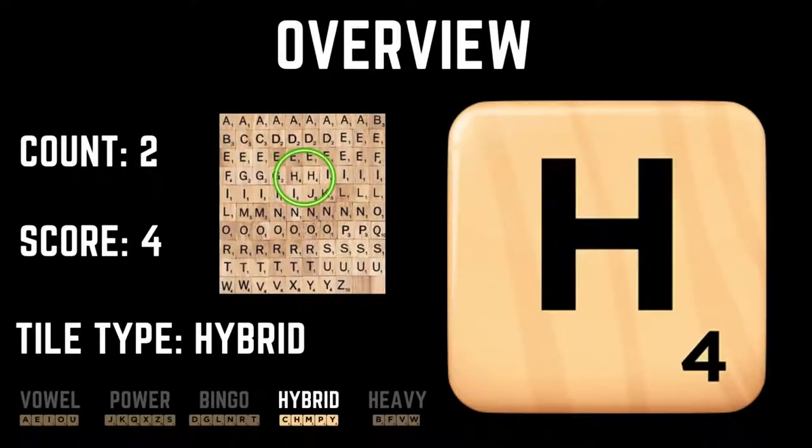There are two H's in the set of 100 tiles used in Scrabble. They're worth four points apiece like most of the tiles in the heavy category, but the H shares more in common with the other tiles in the hybrid category.